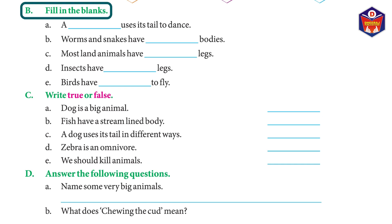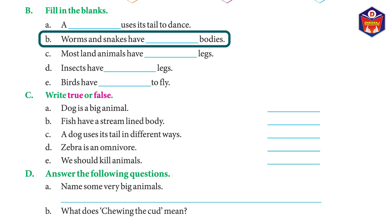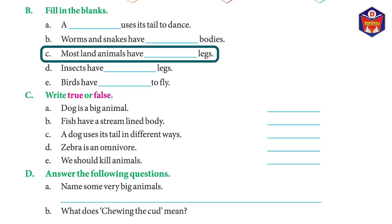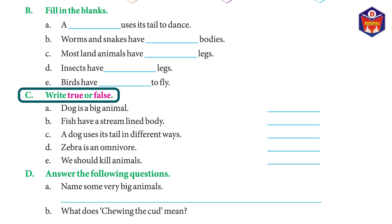Fill in the blanks: (a) A ___ uses its tail to dance — Answer: peacock. (b) Worms and snakes have ___ bodies — Answer: elongated. (c) Most land animals have ___ legs — Answer: four. (d) Insects have ___ legs — Answer: six. (e) Birds have ___ to fly — Answer: wings.